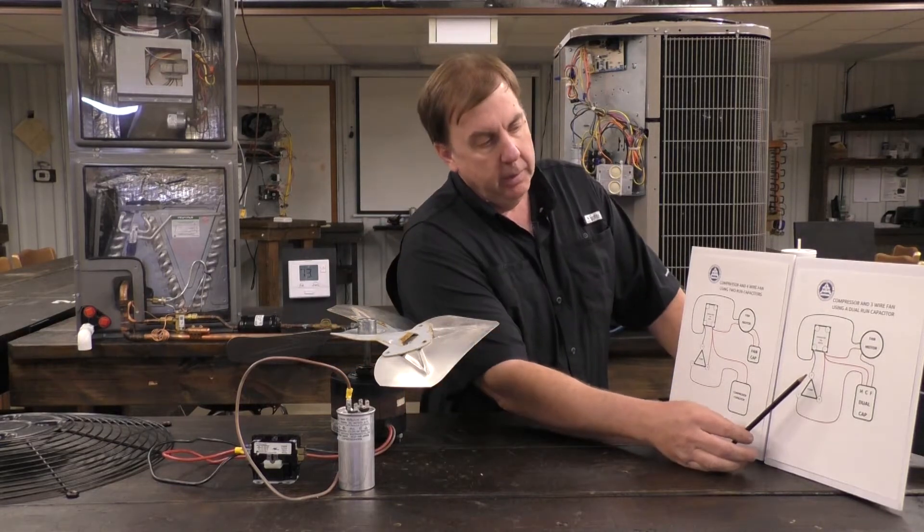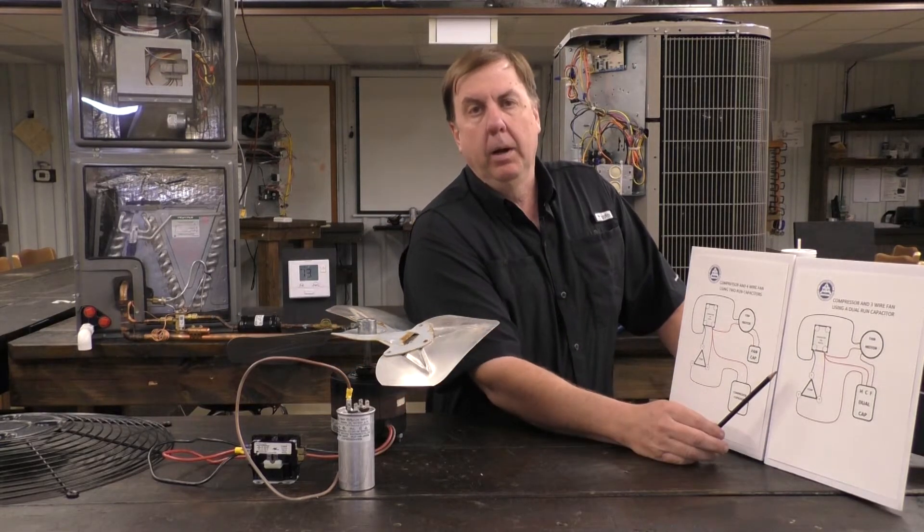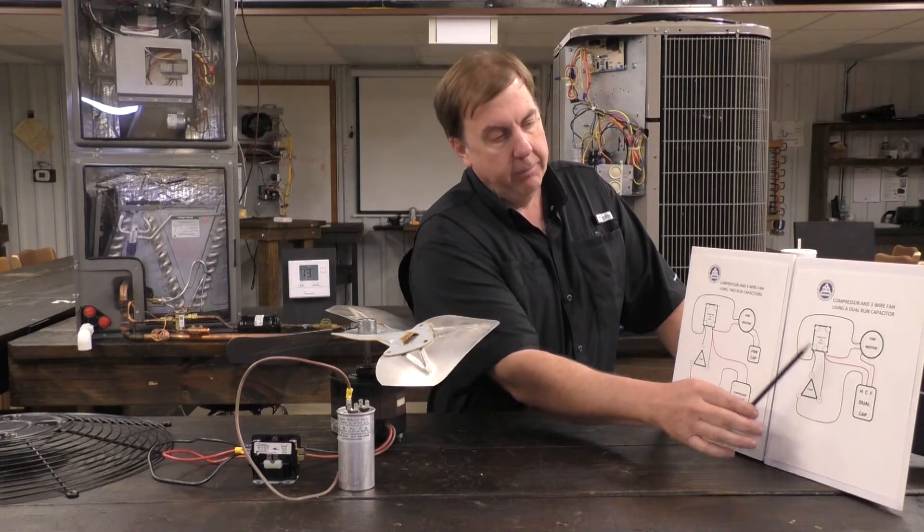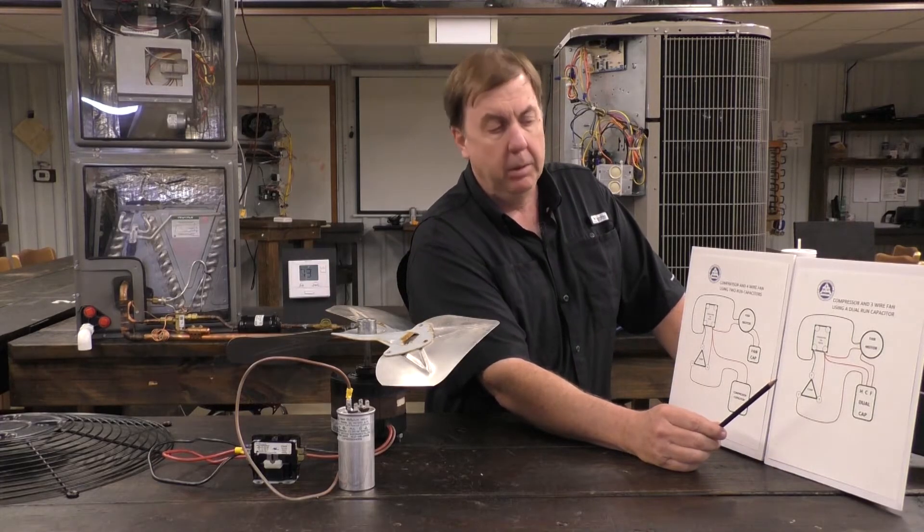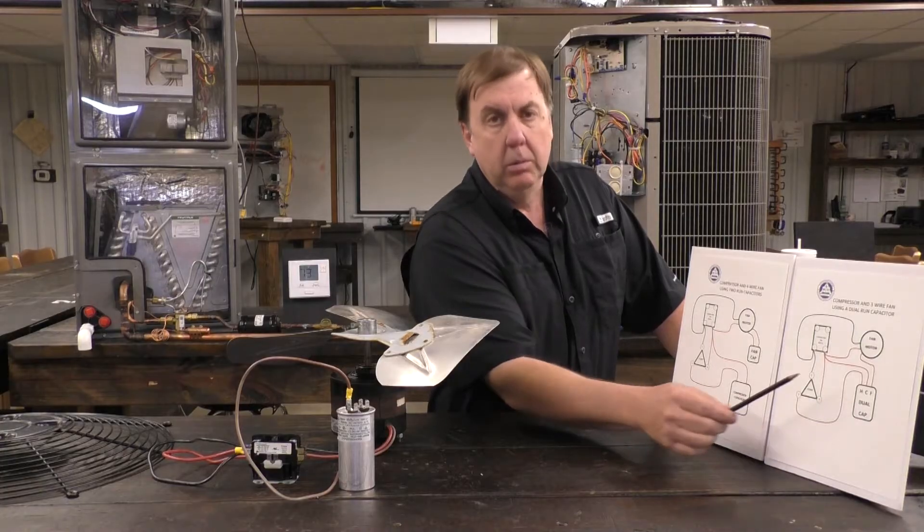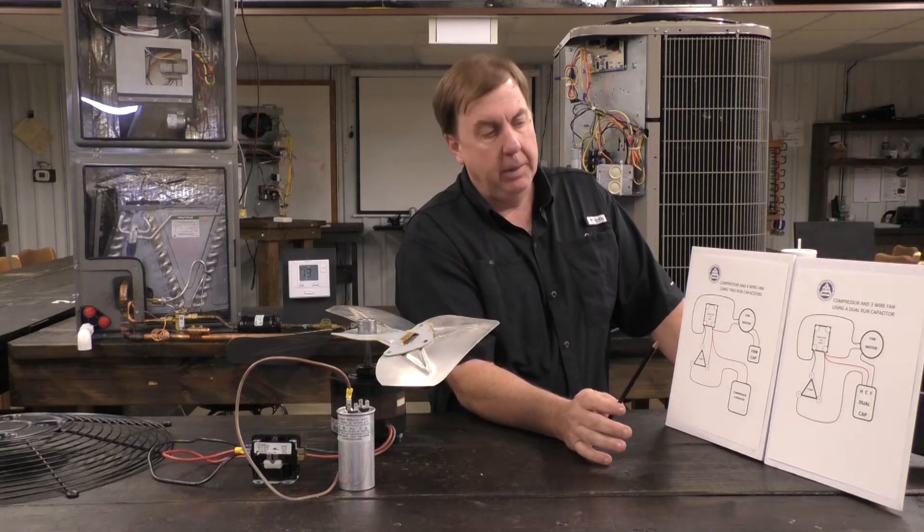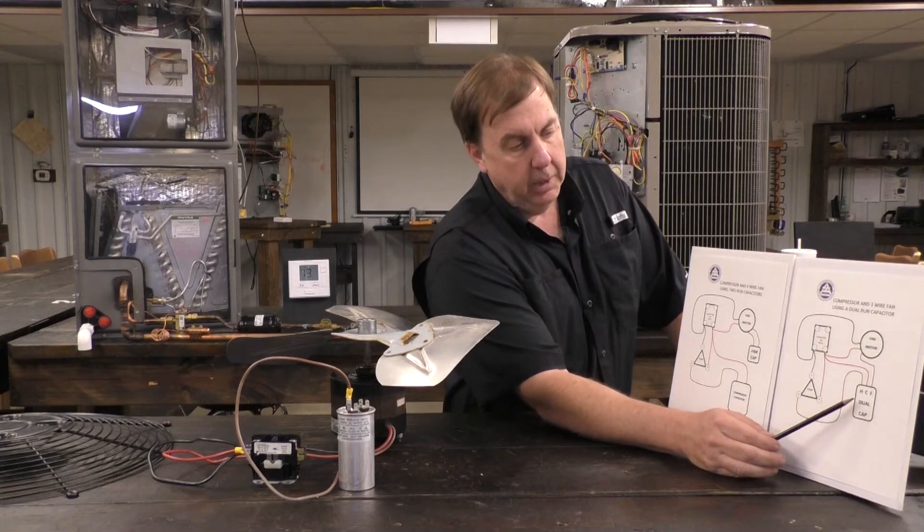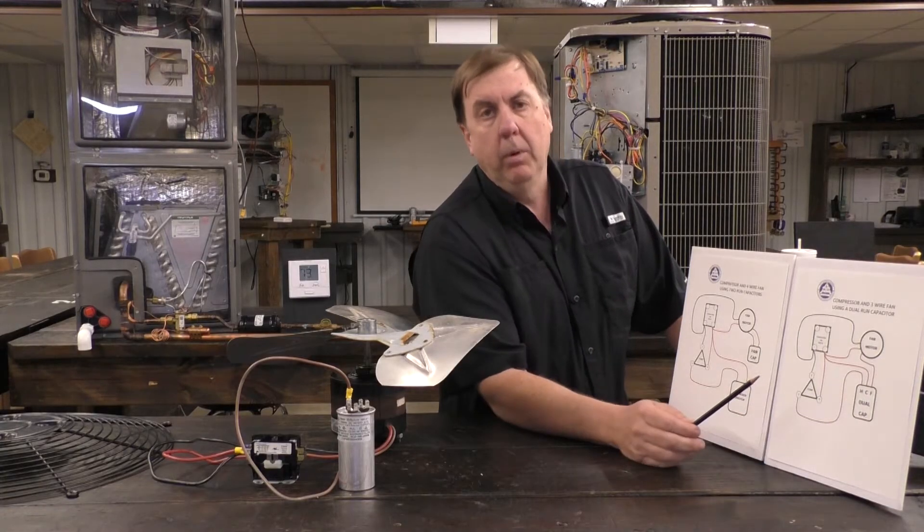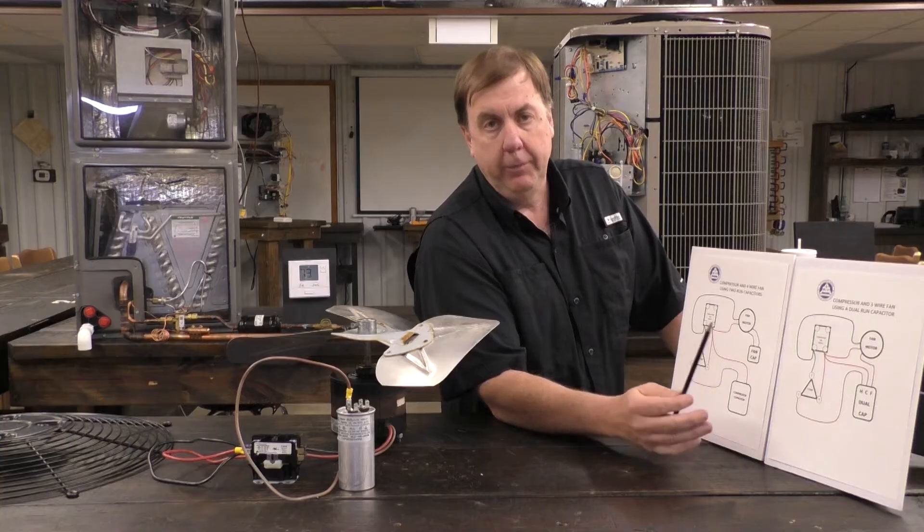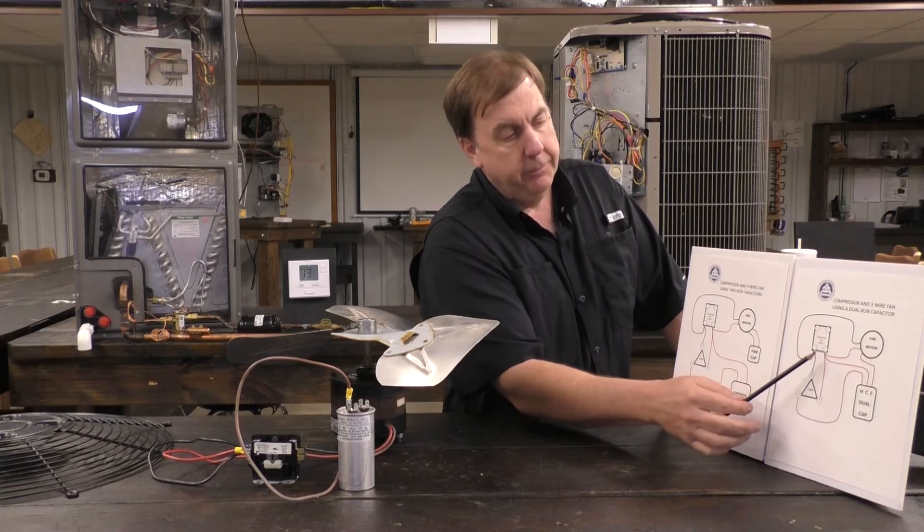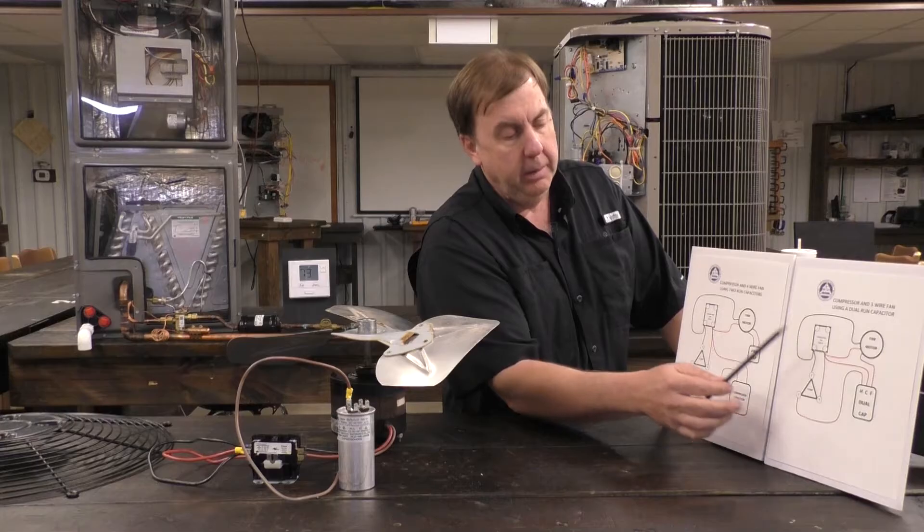Right here we have the normal 3-wire OEM motor, that's what we would have right here. So if you notice, typically it's a 3-wire motor because we have a dual cap, meaning the compressor and the fan both use the same cap. So because it's a dual cap, we only need one wire going to the cap, that's the wire from the fan motor, that's the third wire. The other two wires on the fan motor go to the contactor here and here.